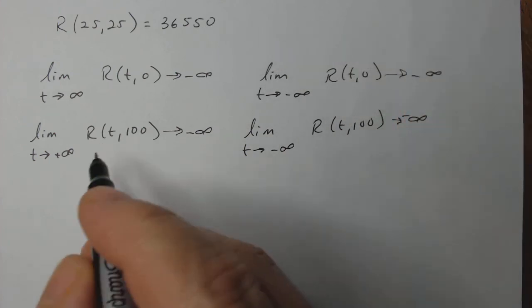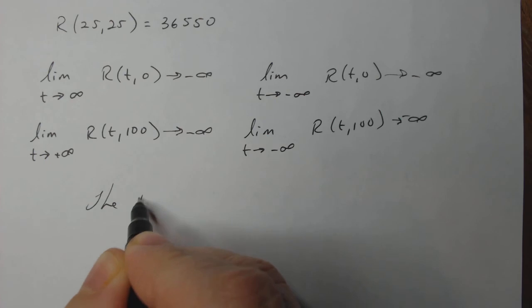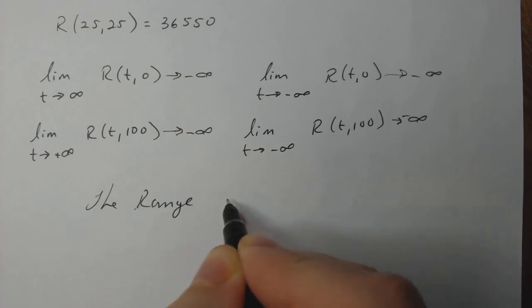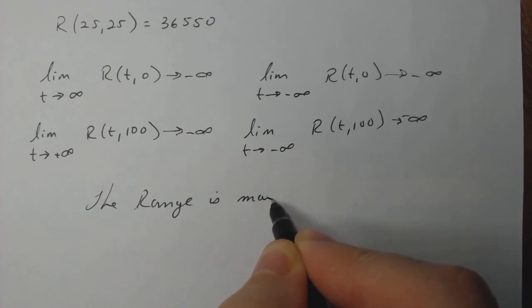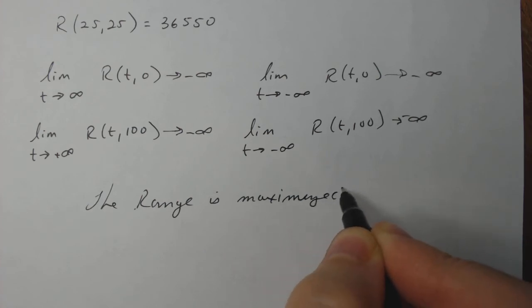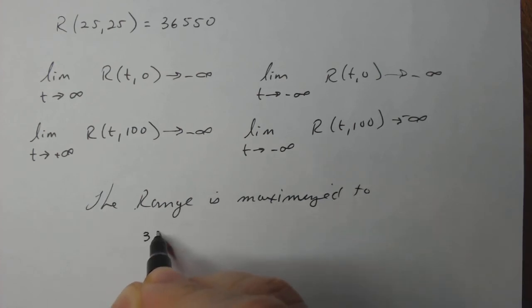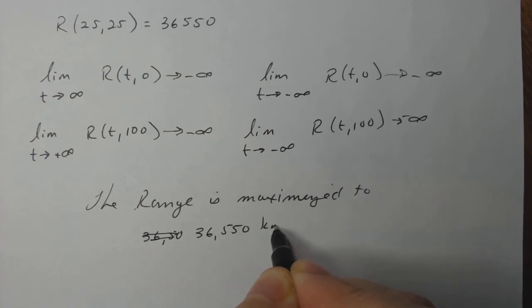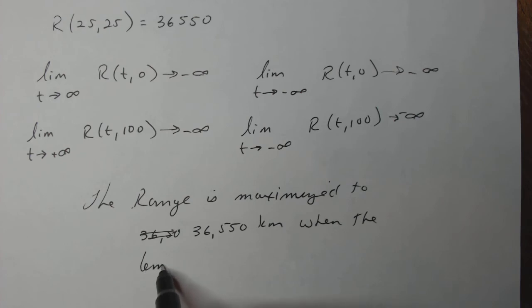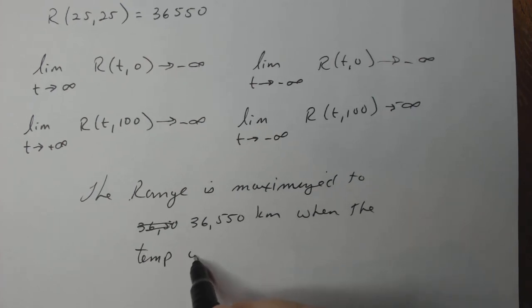So I'd say the range is maximized to 36,550 kilometers when the temperature is 25 degrees Celsius with 25% humidity.